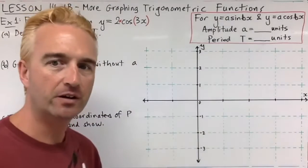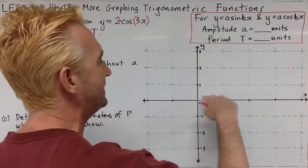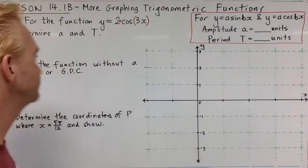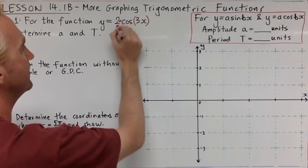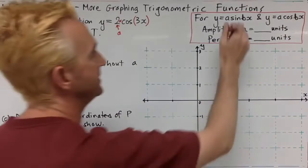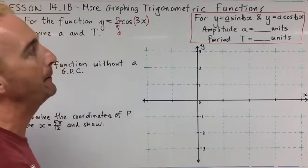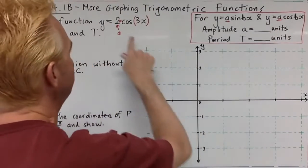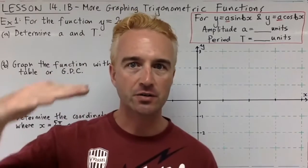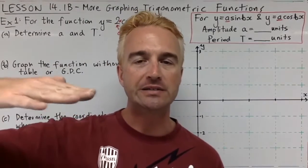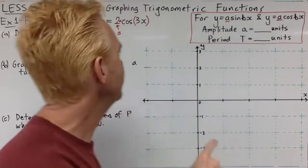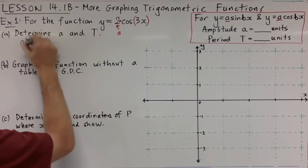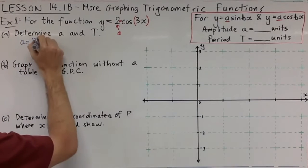First thing we're going to do is determine the amplitude a and the period t. Cosine and sine are wave shapes, and the a value is how high from zero or how low from zero it gets — the amplitude is the number at the front. So for y equals a sine bx or y equals a cos bx, a is the number at the front. Last time sine and cosine went up to one and down to minus one with nothing at the front, meaning a was one. This time a is 2, and since amplitude is a length, a is 2 units.